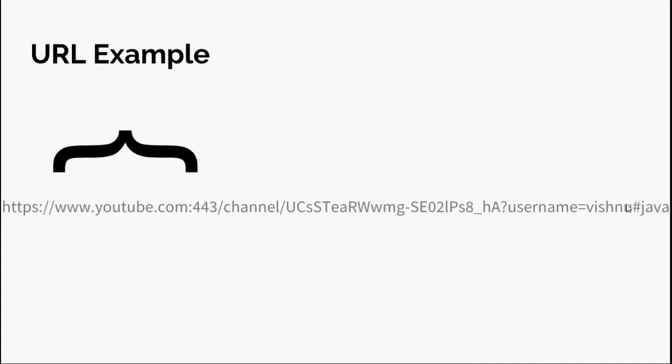www.youtube.com specifies the computer where the file resides — this is known as the authority or host. HTTPS is the protocol or scheme, similar to other protocols such as FTP. You can search about others on Google.